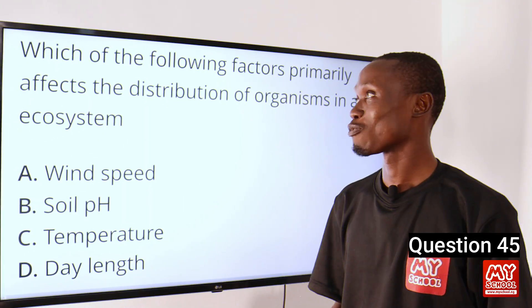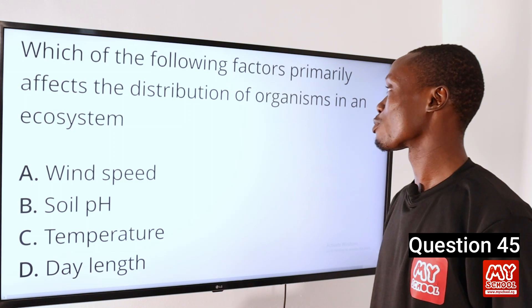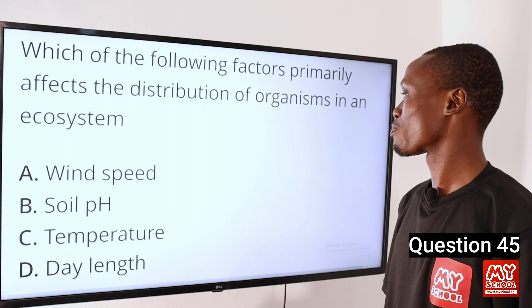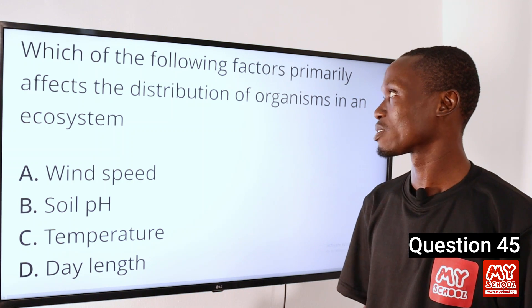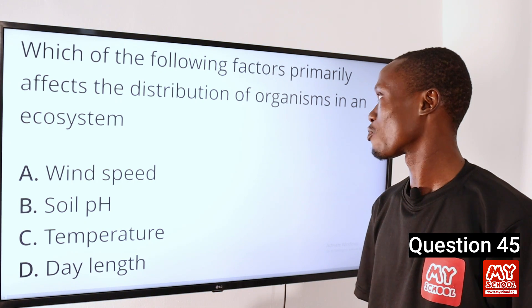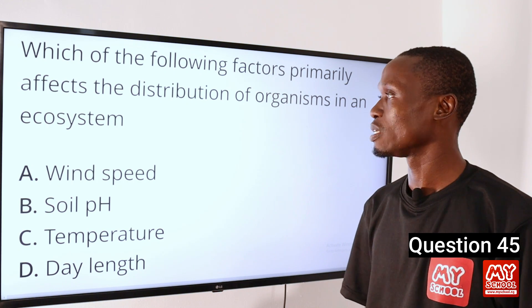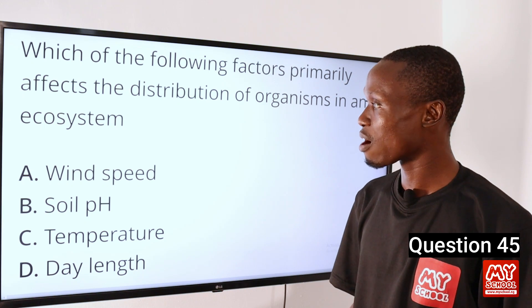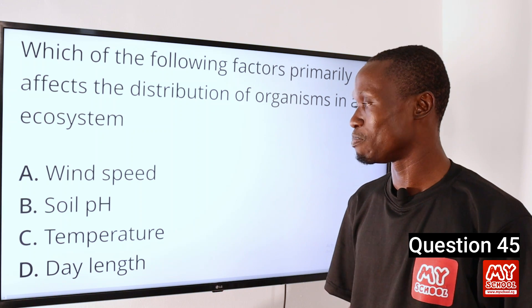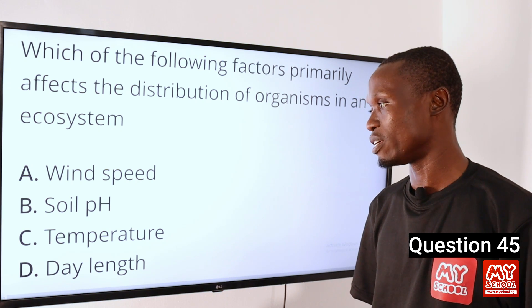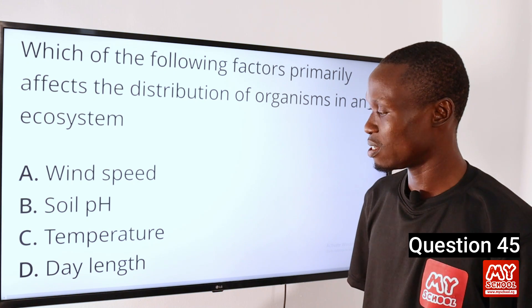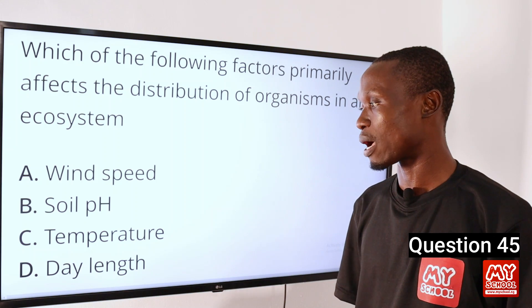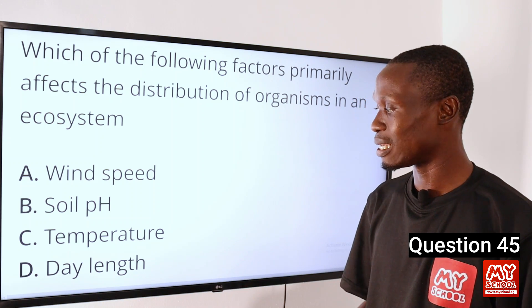Question 45. Which of the following factors primarily affects the distribution of organisms in an ecosystem? A. Wind speed. B. Soil pH. C. Temperature. D. Day length.